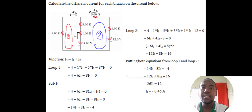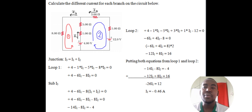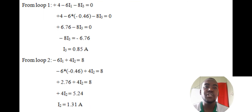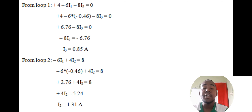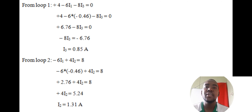The negative means I1's assumed direction is actually reversed. Instead of rewriting the junction equation this time, we'll carry the negative value through the existing loop equations. So when substituting I1, we use negative 0.46.